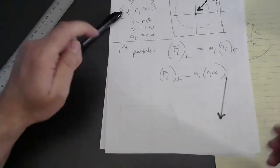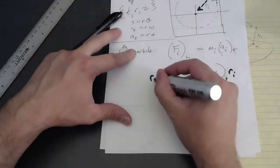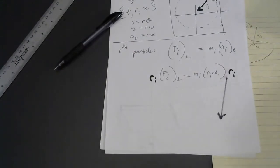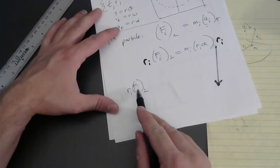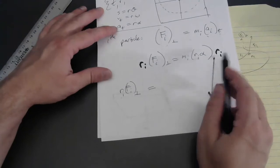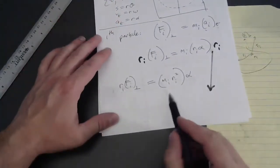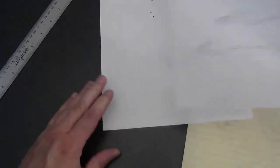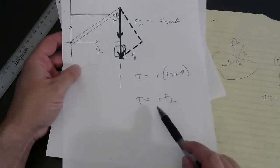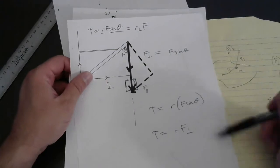Here comes the clever part. We don't change the equality by multiplying both sides by the same quantity, so I multiply both sides by r_i — the distance of the i-th particle from the axis of rotation. On the left side I get r_i times F_{i,perp}, and on the right side I get m_i times r_i squared times alpha. Notice that r times F-perp is exactly how we express the torque on a single particle.